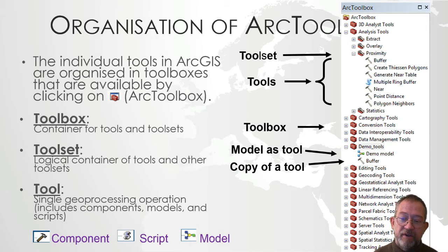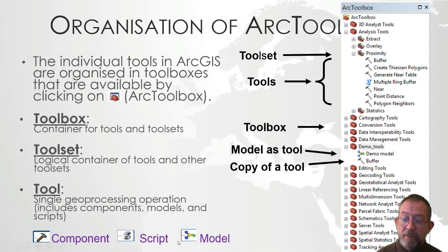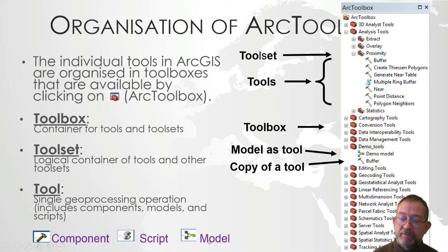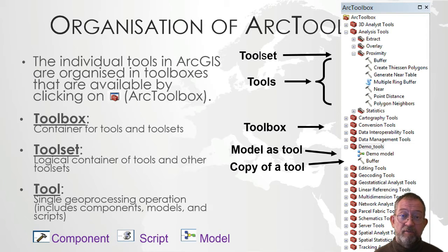Tools can have three different icons. They can have the little hammer icon, which indicates that the tool is written in C or some compiled language. There is the script icon, which indicates that the tool is written in a script language, typically Python. And finally there is the model symbol, which indicates that the tool has been created using the Model Builder.